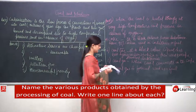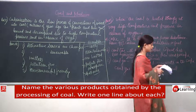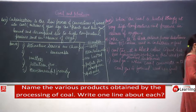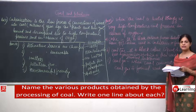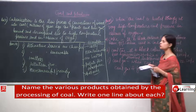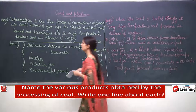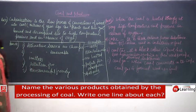Question number 16: mention four consequences of excessive use of fossil fuels. The blackboard needs to be cleaned before we proceed to this question.